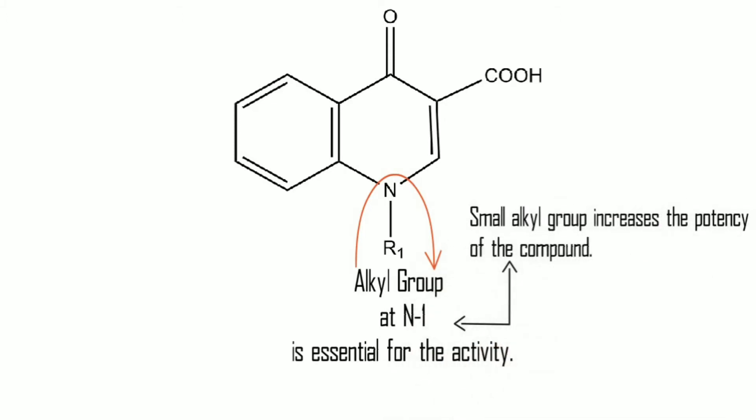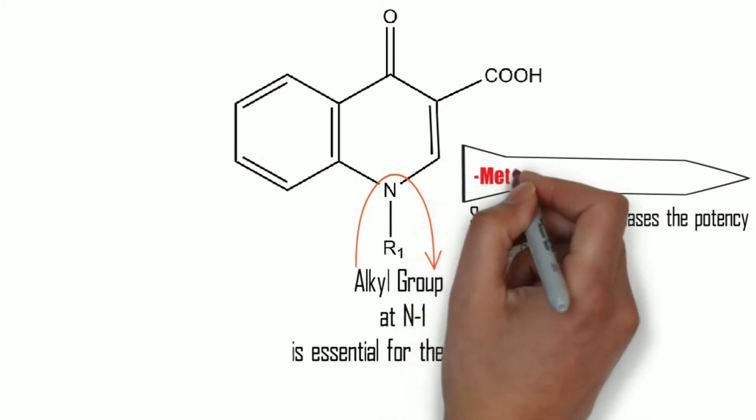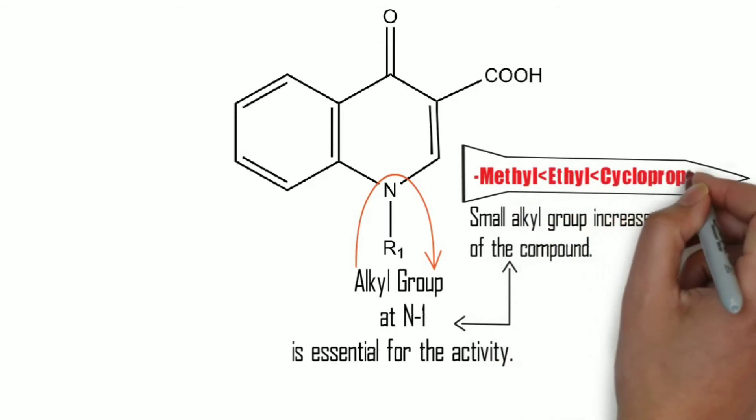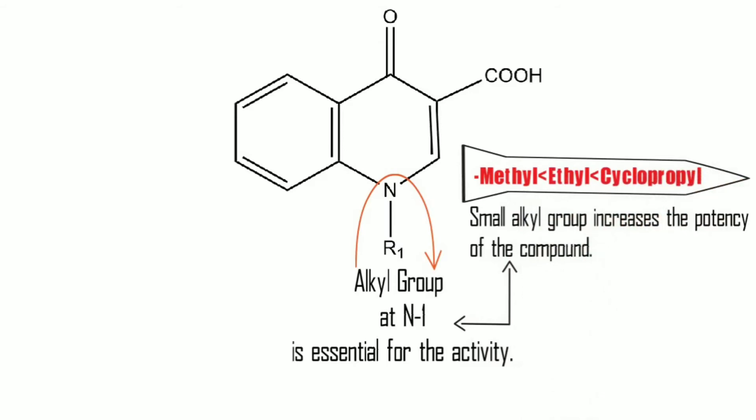If we see the comparative order among the different alkanes, methyl is less potent than ethyl, and ethyl is less potent than cyclopropyl. It means cyclopropyl is more potent than methyl and ethyl.